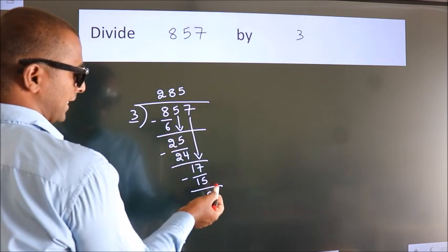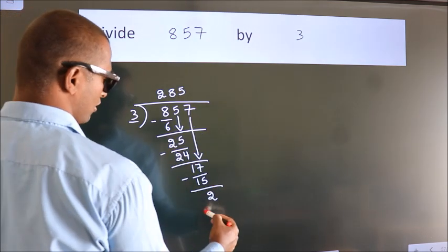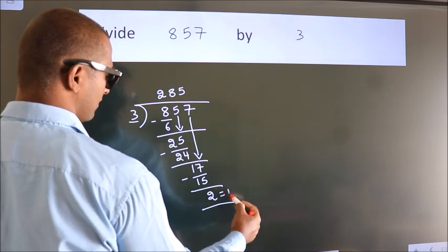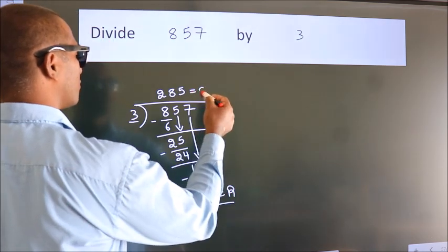No more numbers to bring it down. So we stop here. This is our remainder. This is our quotient.